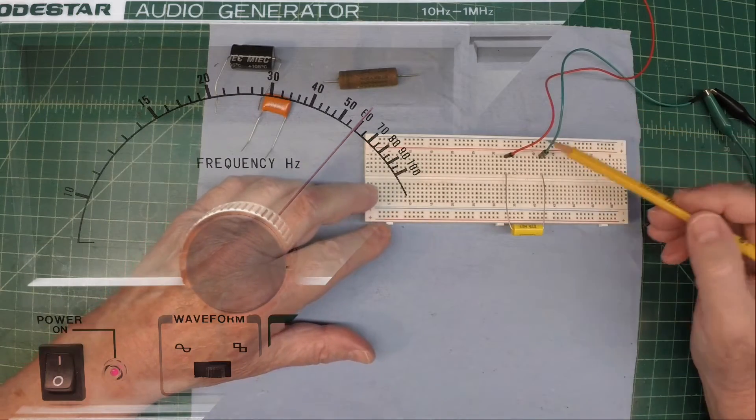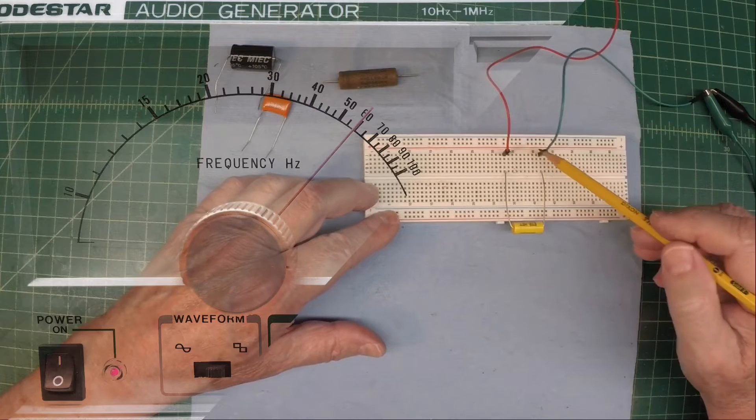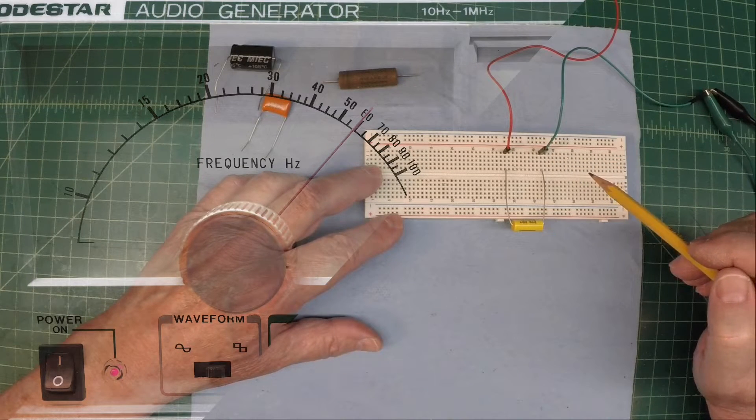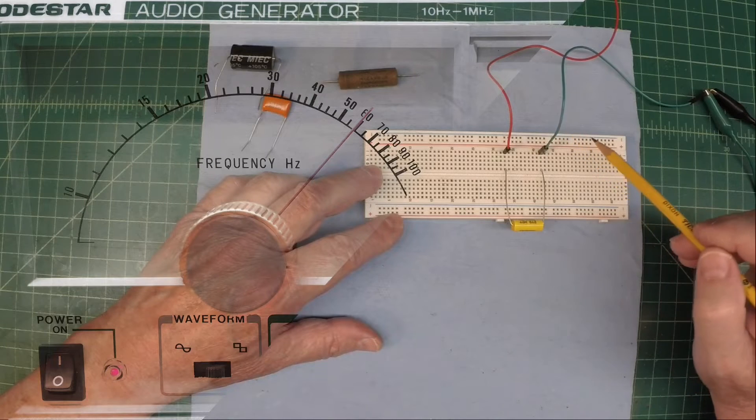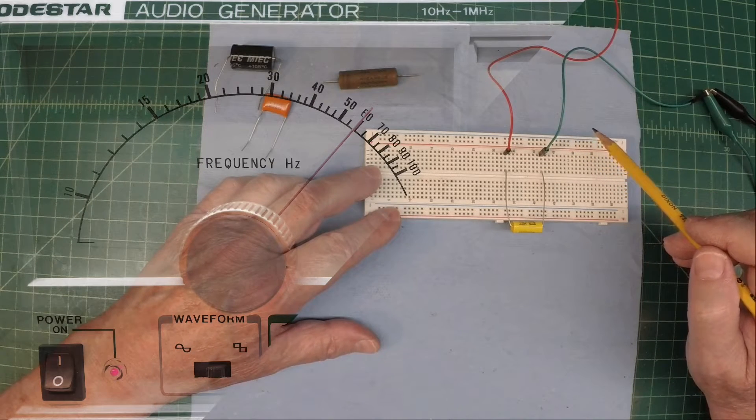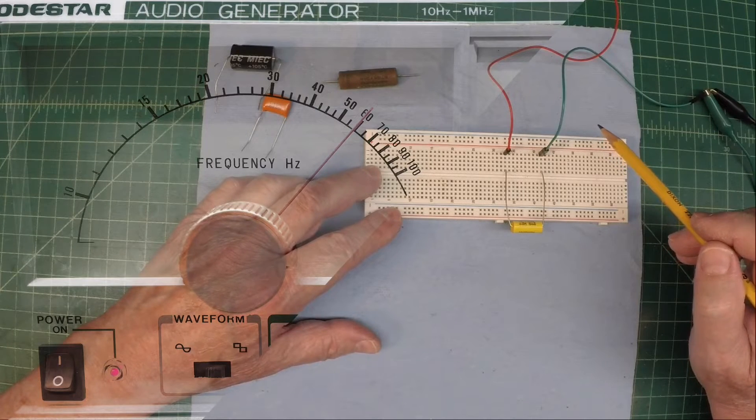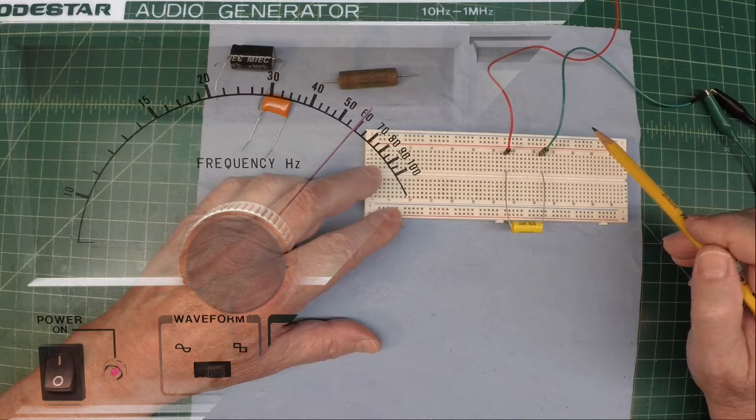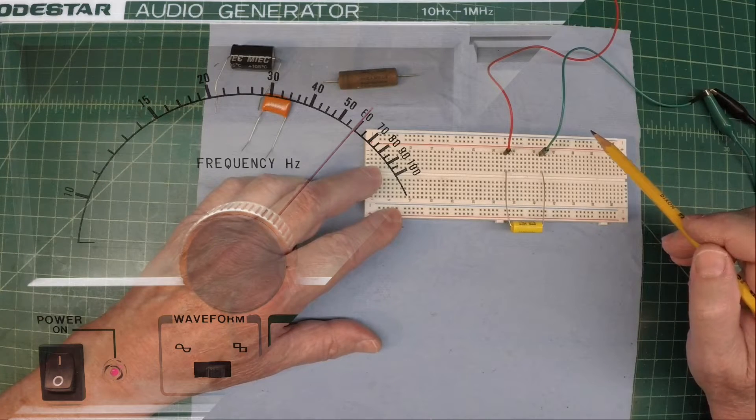You'll notice I have these leads here coming down to my board and I'm generating an audio signal from my audio signal generator around one to two volts in amplitude. I'm gonna start out using a square wave instead of a sine wave right around 60 Hertz or so.